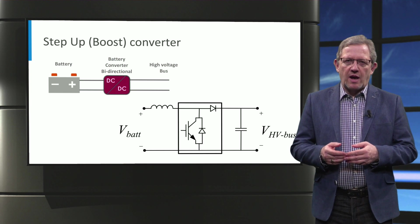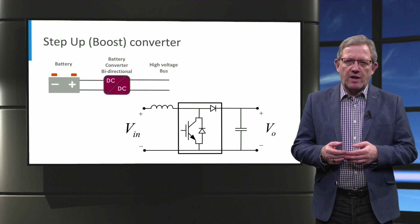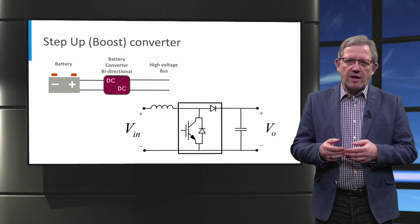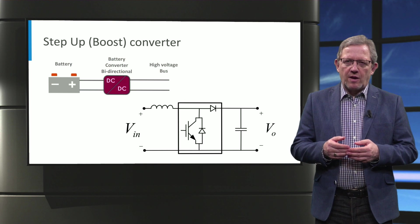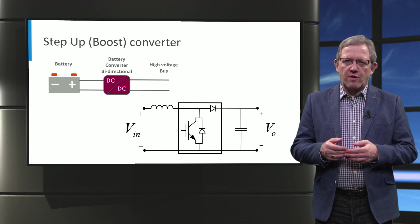Under this mode, the battery on the left side is the input voltage V_in and the high voltage bus on the right side is the output voltage V_out.